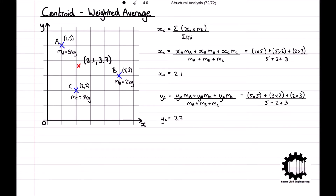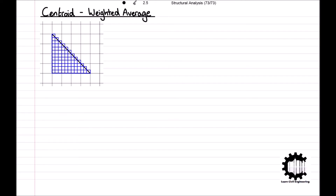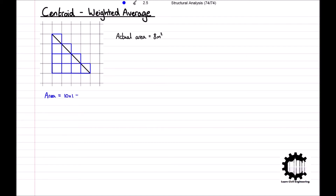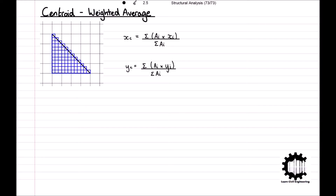With a slight alteration, this approach can also be used to determine the centroid of a region. Considering a triangle for example, the region can be divided into many tiny rectangles. The x coordinate of the centroid is then given by the sum of the area of each rectangle times its corresponding x coordinate, divided by the total area, and the same process is carried out for the y coordinate. The more rectangles the region is split into, the more accurate the result — for instance, using 1m×1m squares gives a total area 2m² greater than the actual area, whereas 0.5m×0.5m squares give only 1m² greater.